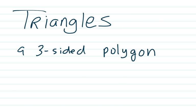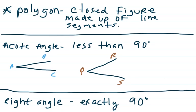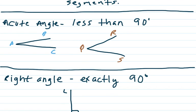Now let's look at some familiar vocabulary. Remember, a polygon is a closed figure made up of line segments. An acute angle is any angle less than 90 degrees.